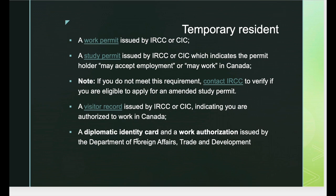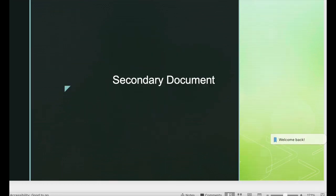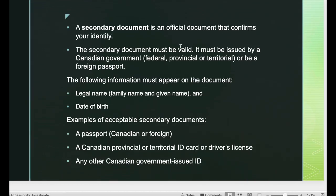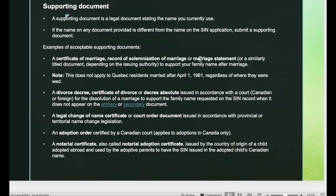For temporary residents, the primary document can be a work permit, study permit, visitor record, diplomatic identity card, or work authorization issued by the Department of Foreign Affairs, Trade and Development. The secondary document is one that confirms your identity — it should show your legal name and date of birth. Examples include a passport (Canadian or foreign), a Canadian provincial or territorial ID card, driver's license, or any other government-issued ID.